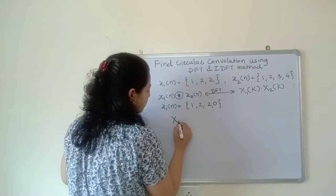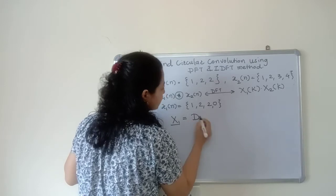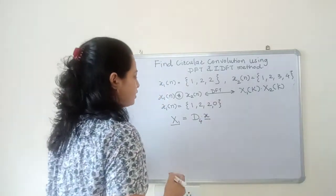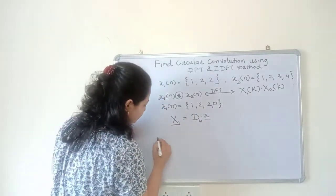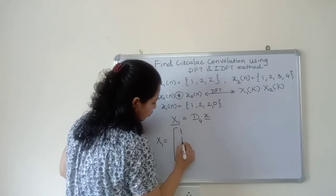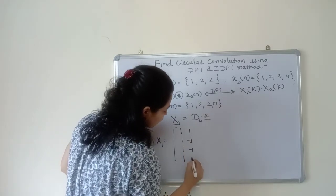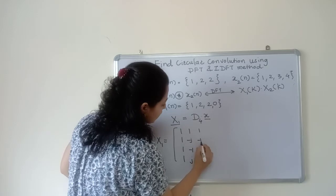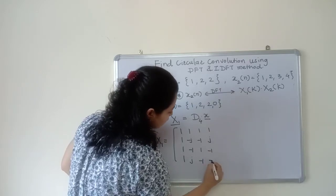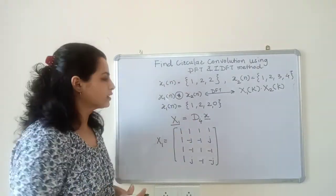The DFT of X1(k) in matrix form uses the formula: the D4 matrix multiplied by x. The 4-point DFT matrix D4 is: row 1: [1, 1, 1, 1]; row 2: [1, -j, -1, j]; row 3: [1, -1, 1, -1]; row 4: [1, j, -1, -j]. We have seen how to build this matrix in previous lectures.